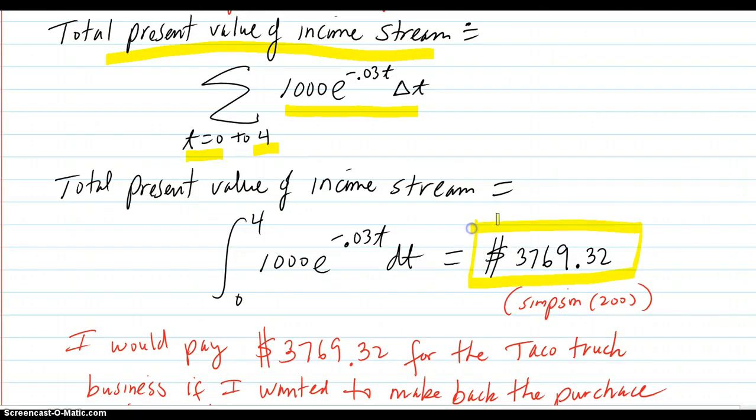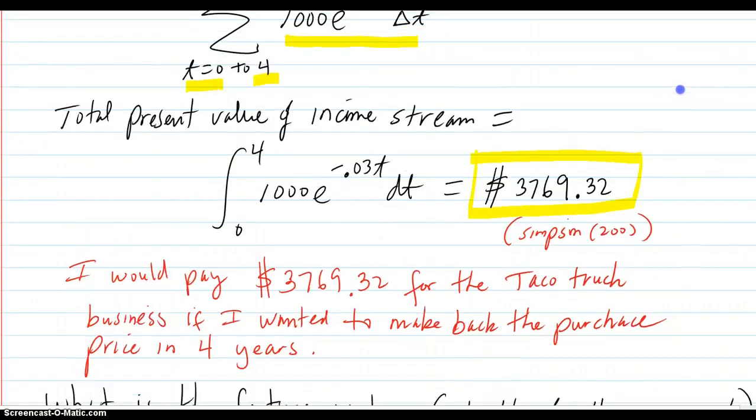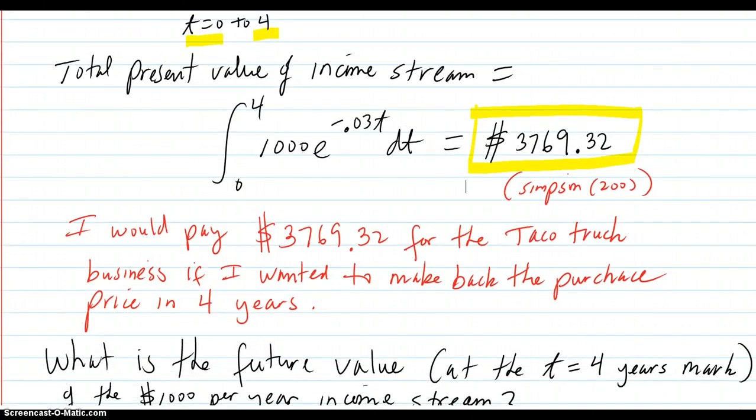The total present value of the income stream is this integral, and by Simpson 200 it comes out to be $3,769.32. So I would pay that amount of money for the taco truck business if I wanted to make back the purchase price in exactly four years.